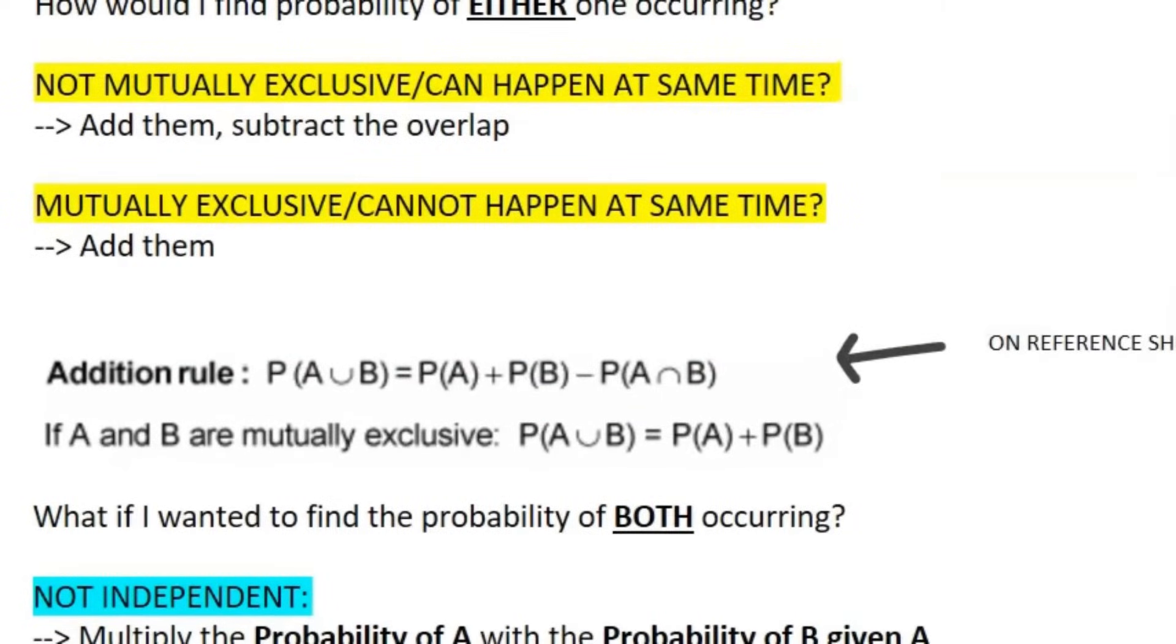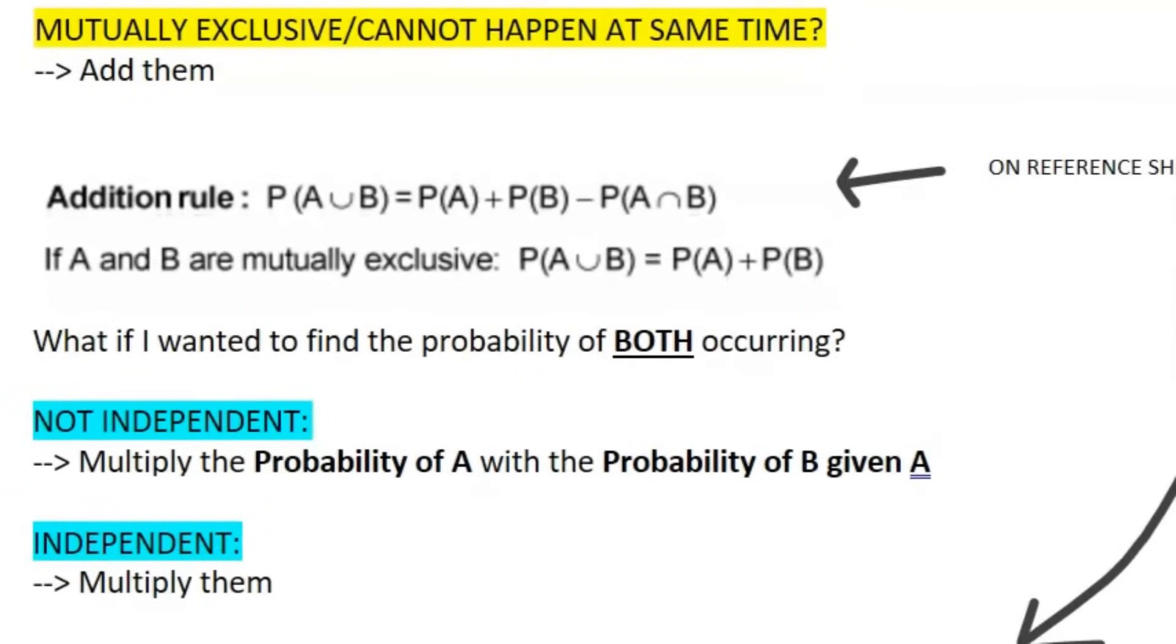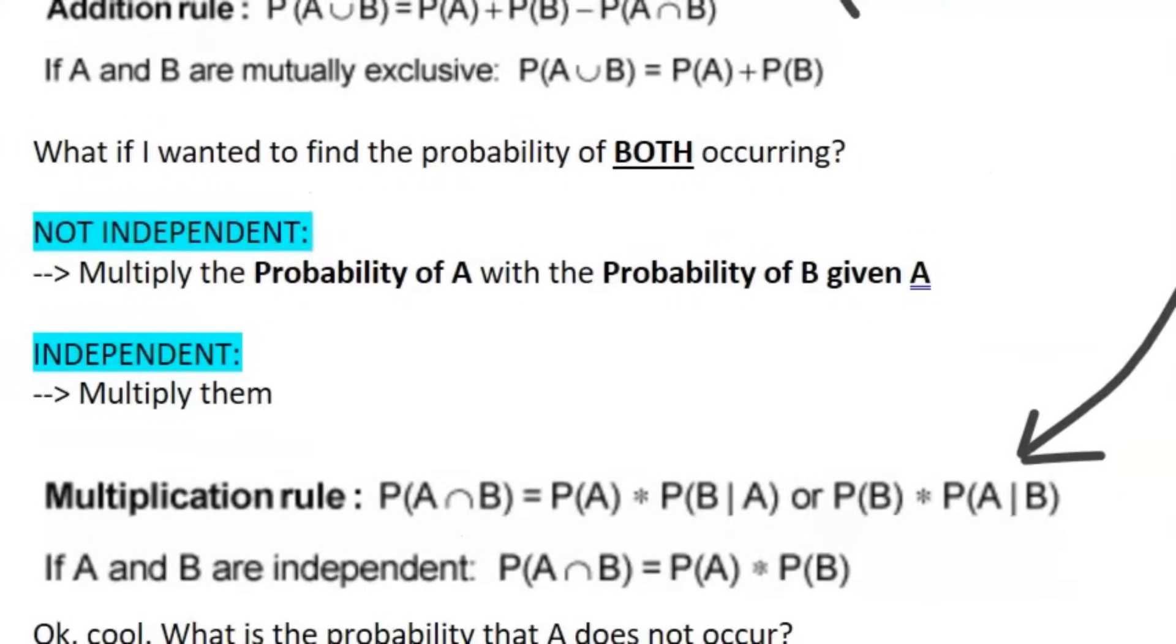So now what if I wanted to find the probability of both event A and B occurring at the same time? Well, if they were not independent, you would just multiply the probability of A with the probability of B given A. If they were independent, you would simply multiply them. And these equations are also given on the reference table.